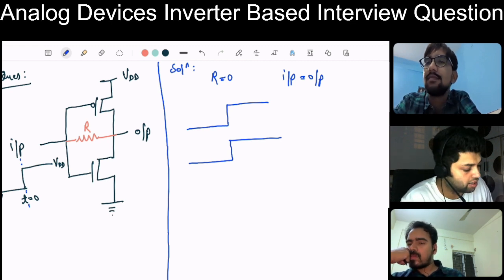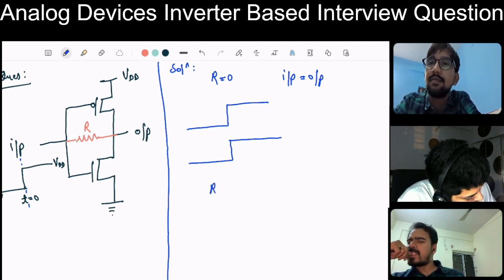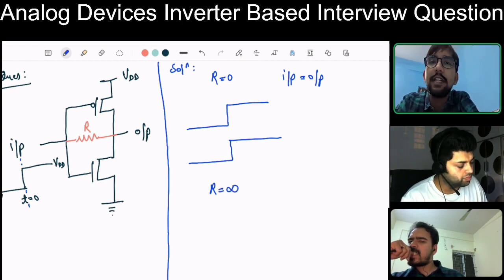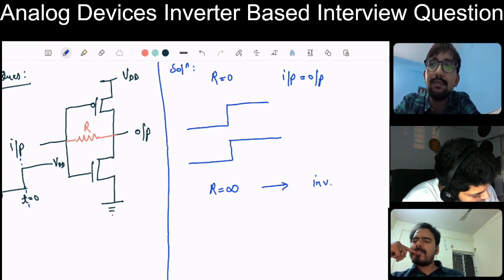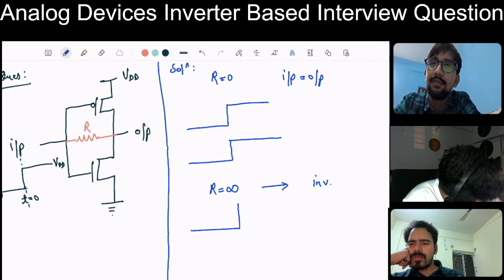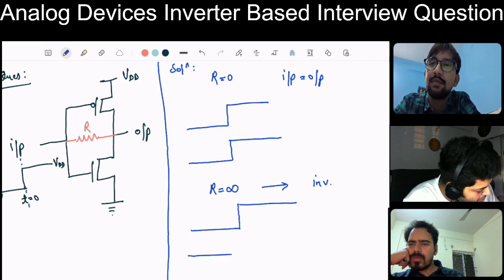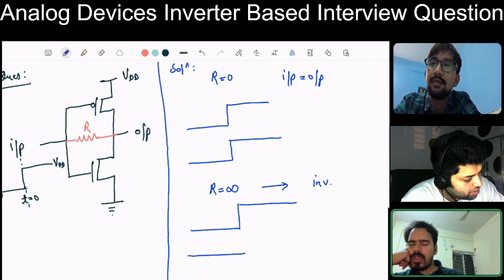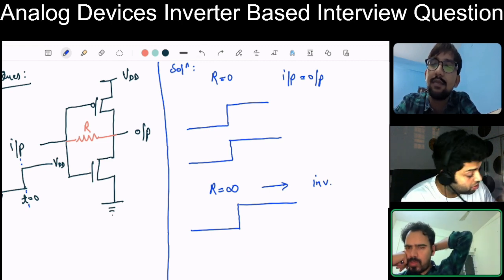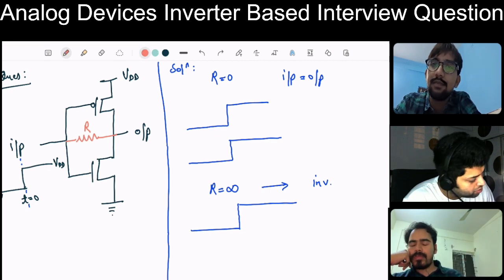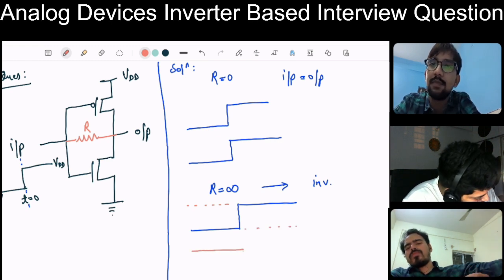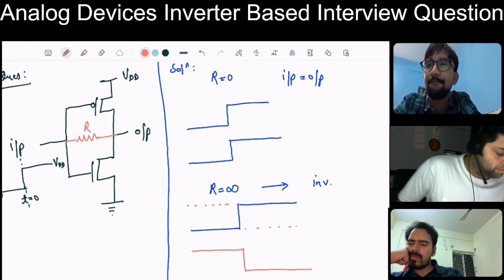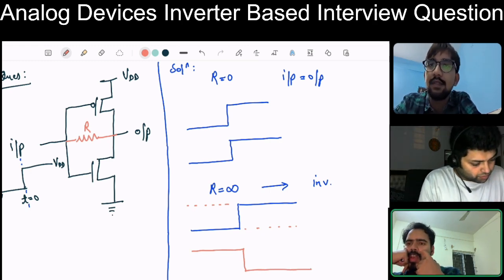When R equal to infinite, it is basically a normal inverter, so we'll get an inverted output. Everything works as an inverter and the waveform will be inverted — so for the input waveform the output will be like this. It is working as an inverter.